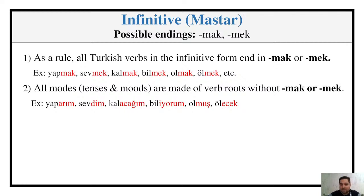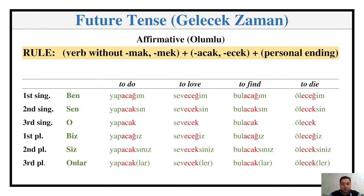Let's see and describe how we construct future tense in Turkish language. Future tense in Turkish is stable and fixed — there's no multiple versions of it. We basically have two possible endings: -acak or -ecek. Compared to the simple present tense where we had six possible cases, this is very simple and straightforward. We just have two versions: -acak or -ecek.